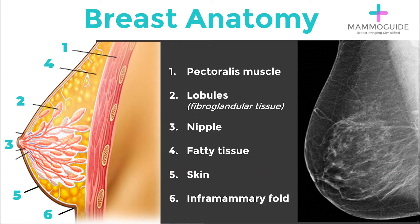Breast anatomy is very basic. There are only a few main structures that you need to know. The borders of the breast consist primarily of skin, the pectoralis muscle posteriorly, and the nipple areolar complex anteriorly. The inframammary fold is the area where the breast meets up against the chest wall inferiorly.